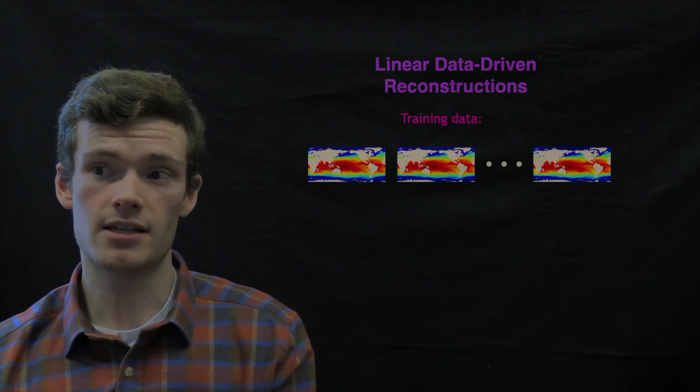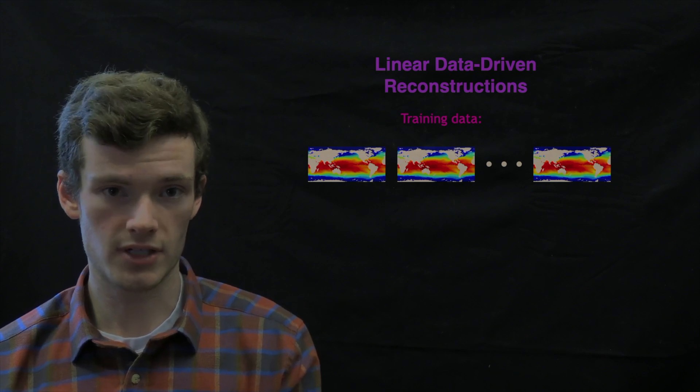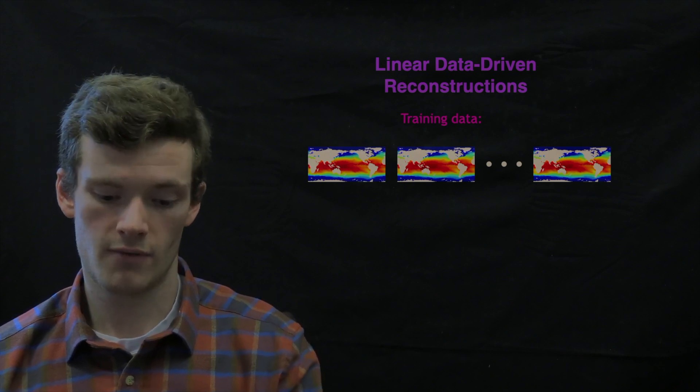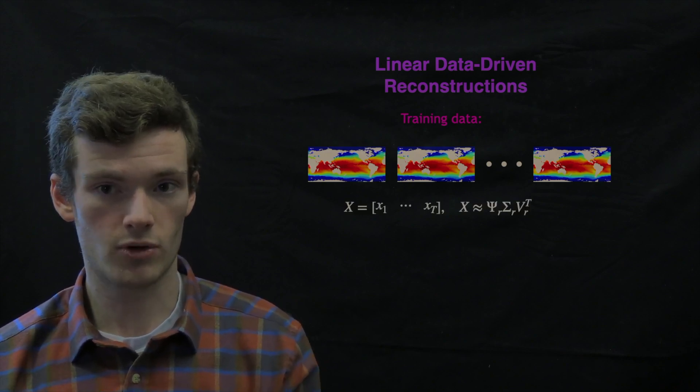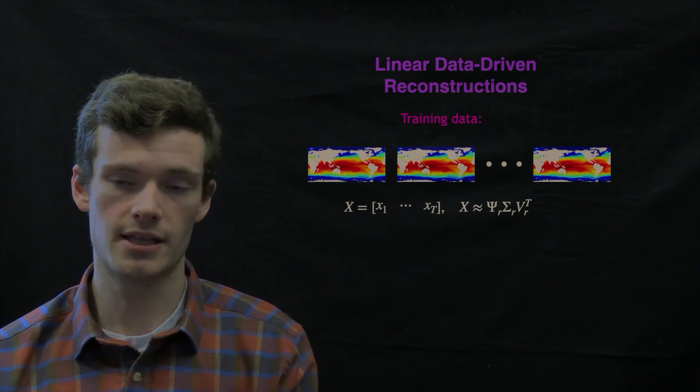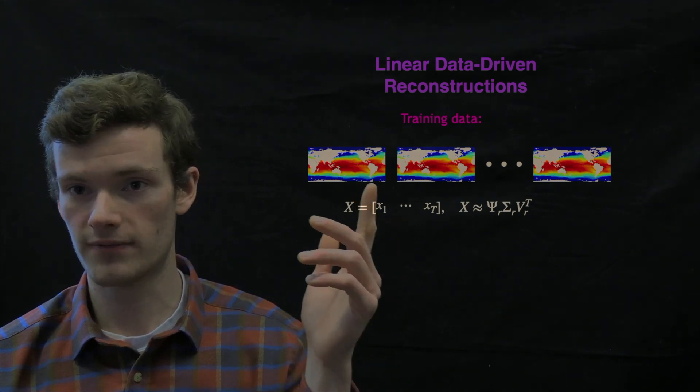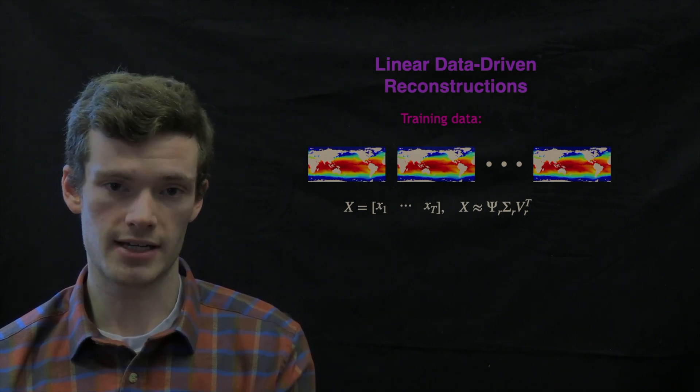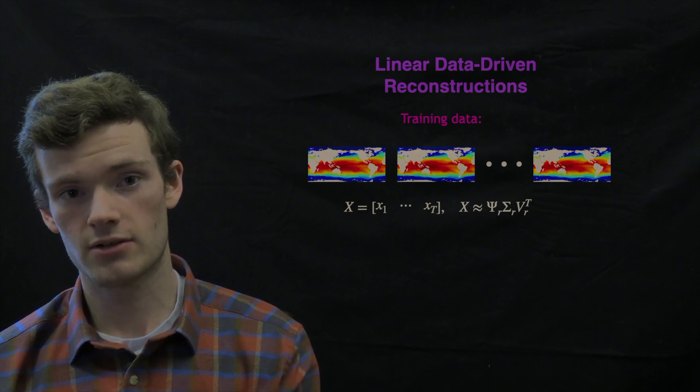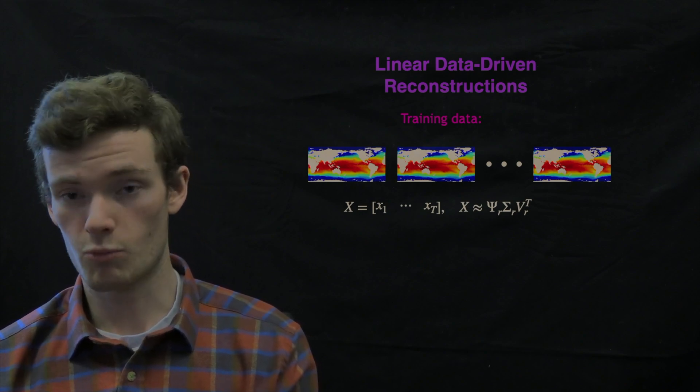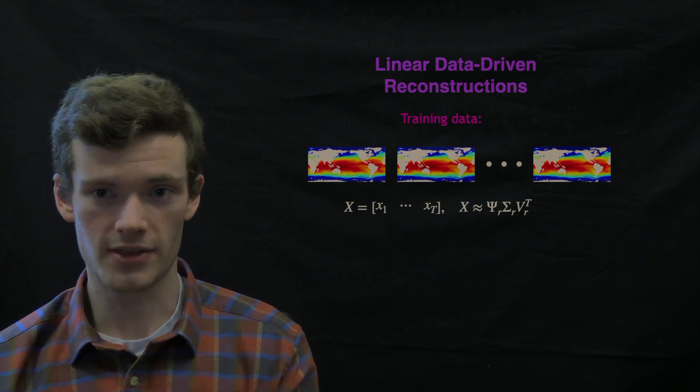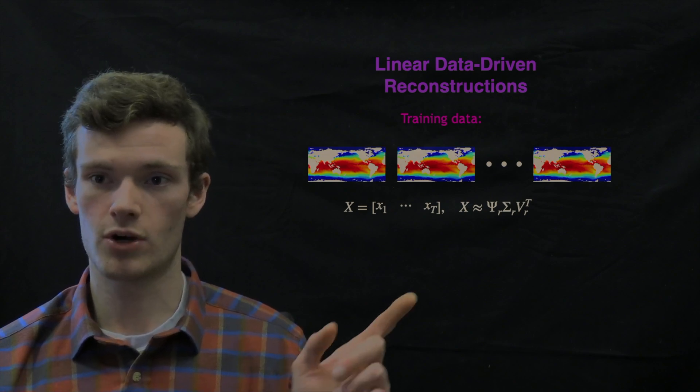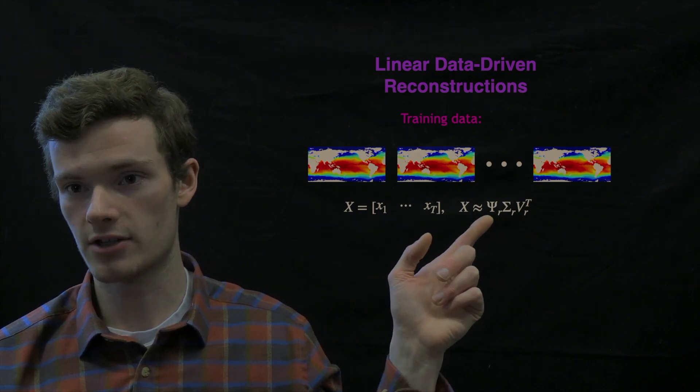So more specifically, we can think about a linear data-driven reconstruction of such a high dimensional field. And in this example, we'll assume access to some set of training data from which we construct a training data matrix. We'll call it X, where each column of the matrix represents the state, the high dimensional field, so like sea surface temperature, at time t. And we perform the singular value decomposition of that training data matrix. Now the singular value decomposition, or POD, is a workhorse in machine learning.